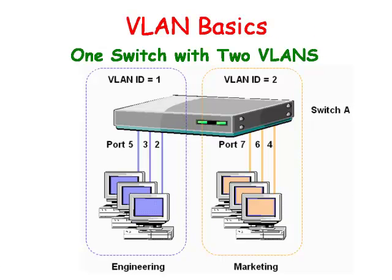A LAN is a local area network and is defined as a network where all the connected devices can broadcast to each other. A VLAN is a virtual LAN, meaning that all the ports of a switch are grouped into separate LANs, and those LANs cannot communicate with each other without a routing device. This works by having an administrator put some switch ports in one VLAN and other ports in another VLAN. Each VLAN is a single broadcast domain.